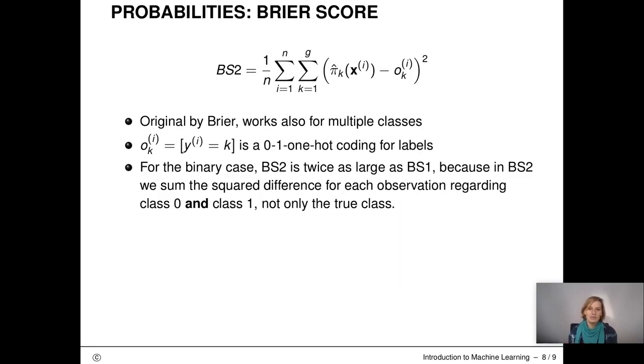For the Brier score, we can also define a version for multiple classes. The O here is an indicator function, which is one if the ith observation is of class k, and zero otherwise. For the binary case, this version of the Brier score is twice as large as what we saw on the previous slide, because here we sum the squared difference for each observation regarding class zero and class one, not only for class one, which we did in the previous slide.